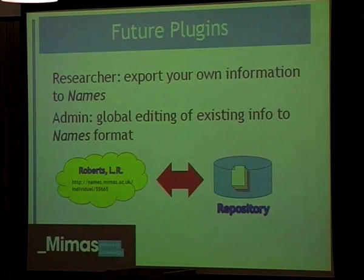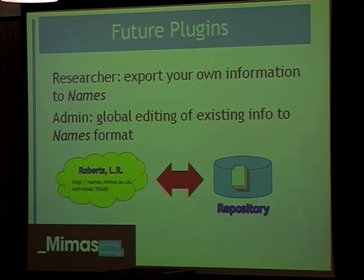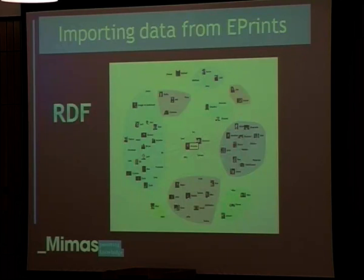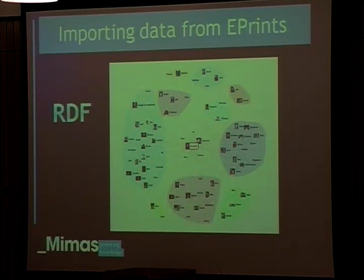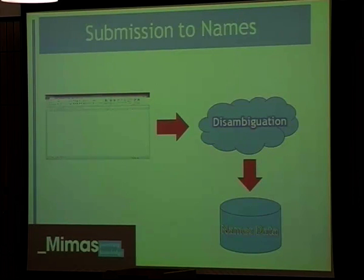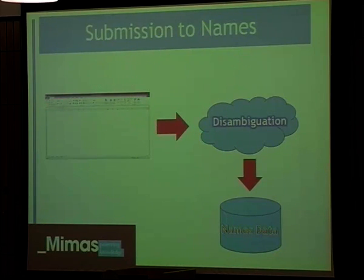There are other plugins that suggest themselves in connection with this. For instance, maybe a researcher can't find themselves on NAMES — perhaps there ought to be a button they can press to submit information about themselves from the repository to our API. Maybe you want to do some sort of global retrospective editing of existing NAMES records to incorporate our URI. We're also looking at the ability that ePrints gives you for exporting a whole RDF graph of all the data in the repository, and we've written a module which imports that into NAMES so we can generate NAMES URIs for all your staff members. In addition, we're publishing a CSV format — you can send us data in a spreadsheet for us to generate NAMES URIs.